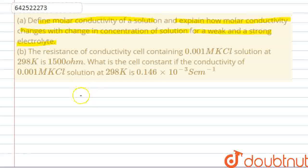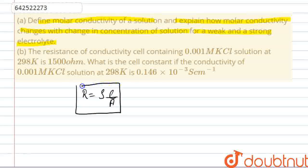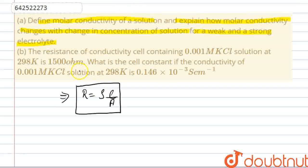We know that basically resistance R is equal to ρL/A. This is the formula for resistance. R is the resistance, ρ is the resistivity, L is the length, and A is the area. We have one term — conductance — that is just the reverse of resistance, that is 1/R equals conductance, represented by G.